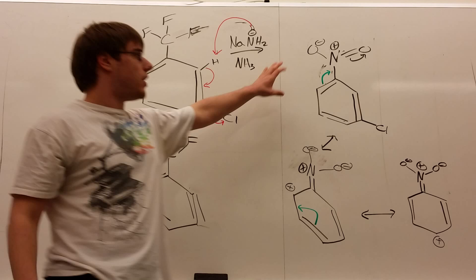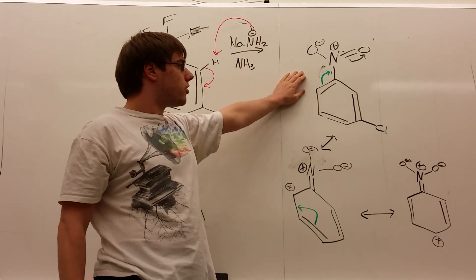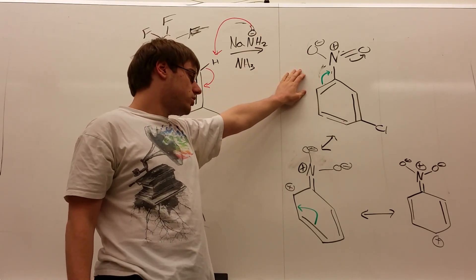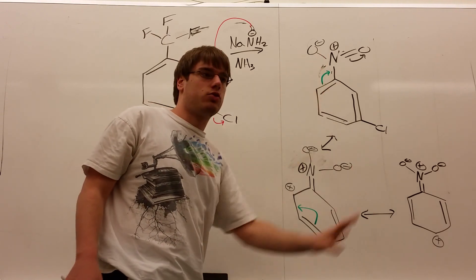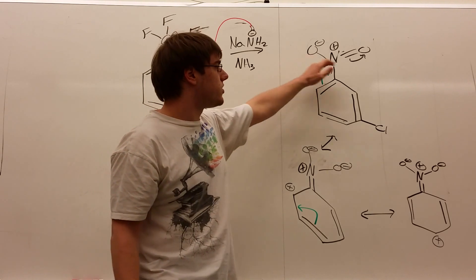And let's start with the NO2. I was saying that if you have a strong withdrawing group on your benzene, you are going to direct ortho and para. And in the case of NO2, that is still true, because with NO2, you have resonance into the nitrogen.